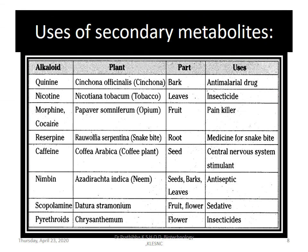Here you can see the uses of secondary metabolites in a table. The first column shows the alkaloid, the second shows the plant system, then the part of the plant, and then its uses. For example, quinine is obtained from Cinchona officinalis — from the bark — and it works as an anti-malarial drug. Other alkaloids include nicotine, morphine, cocaine, reserpine, caffeine, nimbine, scopolamine, and pyrethroids.